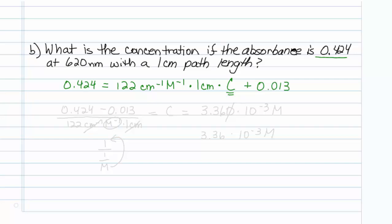Let's do our math. 0.424 minus 0.013 divided by 122 centimeters to the minus 1 molar to the minus 1, times 1 centimeter. Notice our centimeters are going to cancel out. This will equal our concentration. Plug that into our calculator, and we get 3.360.